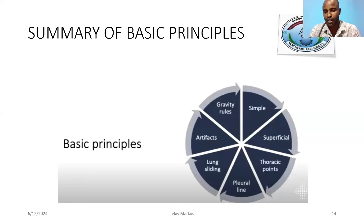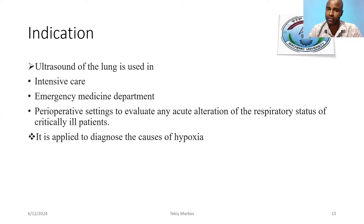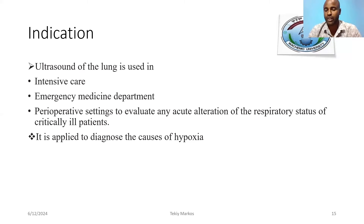Thoracic points should be identified. Pleural lines should be separated and easily identified. Is there lung sliding or not? This is also mandatory to identify. We have indications in different service areas like intensive care units, emergency departments, and perioperative settings where we use lung ultrasound. Point-of-care lung ultrasound is applied here for diagnosis.